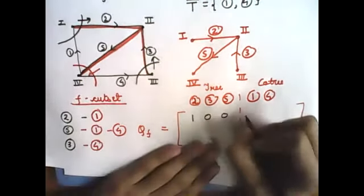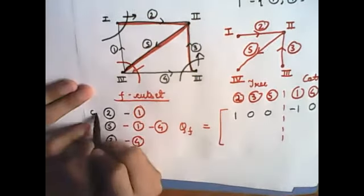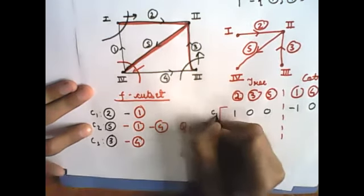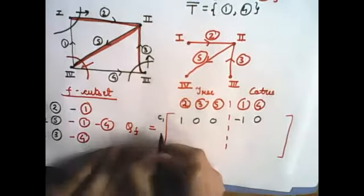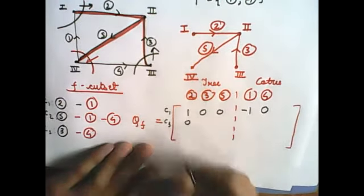And 1 was coming with a negative sign and 4 was absent in this. So isko suppose mein c1 bol raha hoon, c2 aur c3. So c1 ki equation maine likh di. Ab c2 ki likhenge, pehle c3 likhne dijiye, identity matrix jaisa lagega. Then zero.